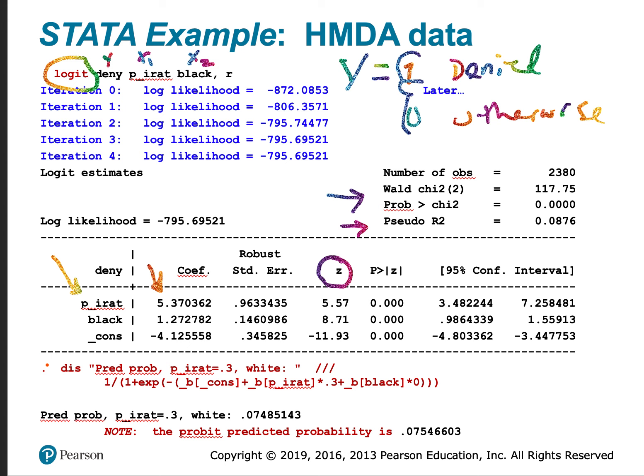We want to display, so dis, this is the shorthand command for display. And then we have some text: predicted probability, comma, for payment to income ratio at 0.3, comma, white.